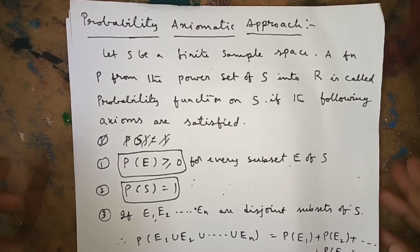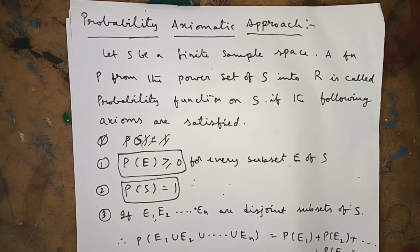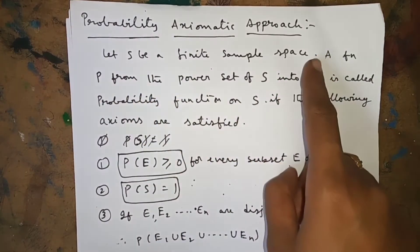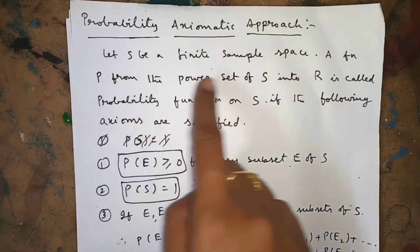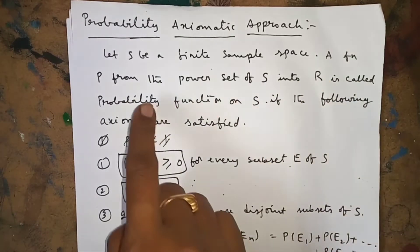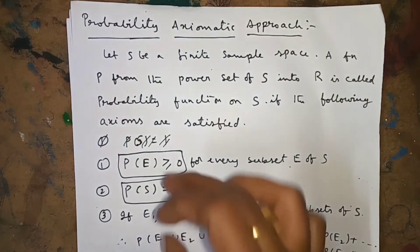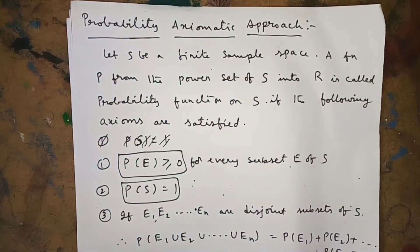Hello everyone. Today I am going to explain Bayes' Theorem. Before starting Bayes' Theorem, I will tell you the axioms of probability — the axiomatic approach to probability. Let S be a finite sample space. A function P from the power set of S into R is called a probability function on S if the following three axioms are satisfied.